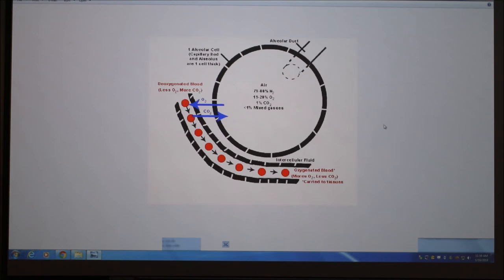You get down to those air sacs. Here's a final duct bringing air down to one sac, and that's the alveolus. It's one layer thick, one cell thickness, and that's very important. Air is 78% nitrogen. The air that's in this room is 78% nitrogen. About 21% oxygen.